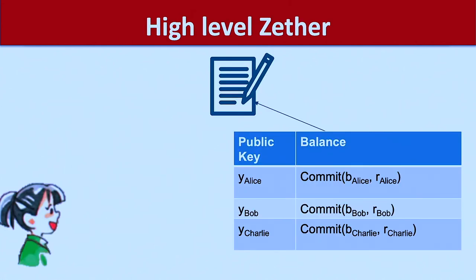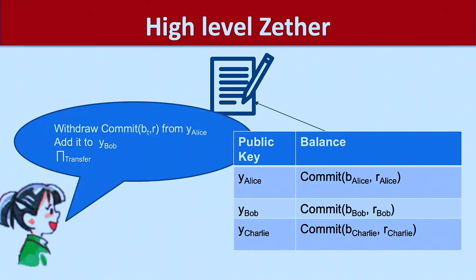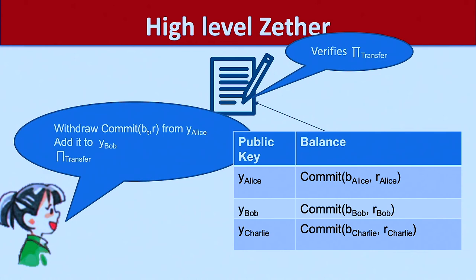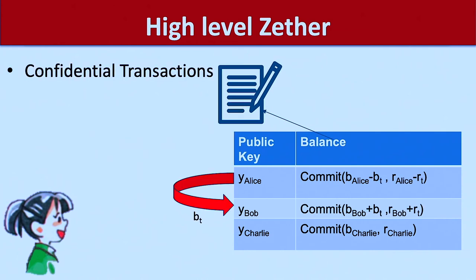Let's think of a straw man design for Zether. I just commit to all of the balances in the smart contract, which keeps this mapping. Then Alice wants to send some money, so she calls the smart contract, tells it to remove some money from her commitment and add it to Bob's commitment — easy to do with homomorphic commitments — and she adds a proof that everything is correct. This seems to work nicely. The problem is: this is completely broken.